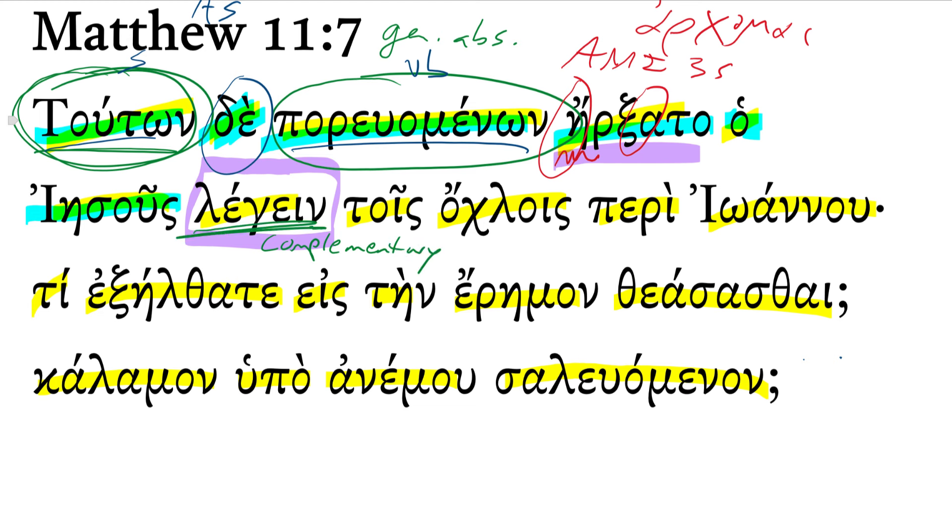Jesus began to speak to the crowds about John. Here's what he said: What did you go out - that's from exerchomai, just a second aorist - what did you go out in the wilderness to see? Purpose infinitive, from theaomai, the verb theaomai.